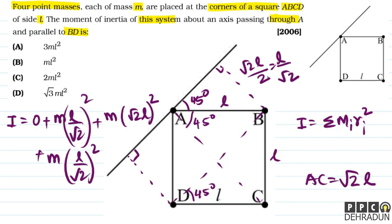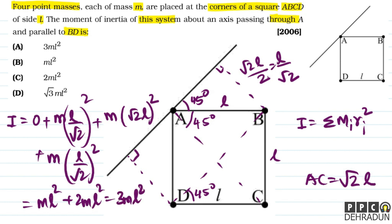So here we go: ML²/2 + 2ML² + ML²/2 = ML² + 2ML² = 3ML². So this is our answer — option number A.